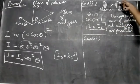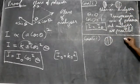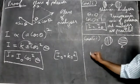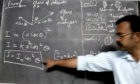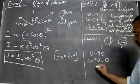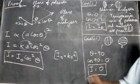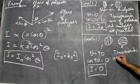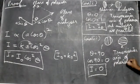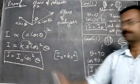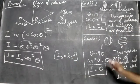Case two: the analyzer is rotated by 90 degrees relative to the polarizer. In this case theta equals 90 degrees. cos 90° = 0, so the entire term becomes zero and I = 0. No light comes out. This means the transmission axes of the polarizer and analyzer are perpendicular to each other. These are the two special cases of Malus's Law.